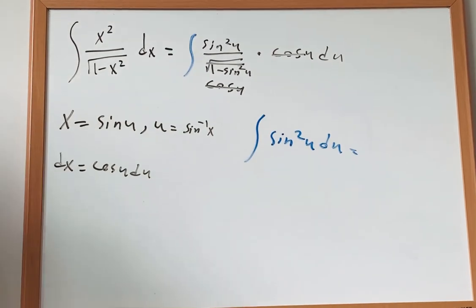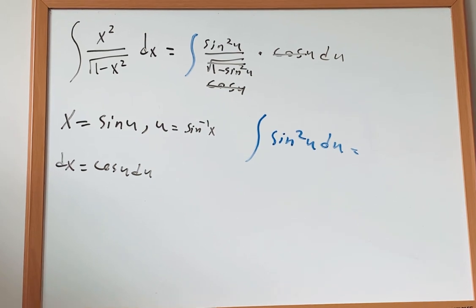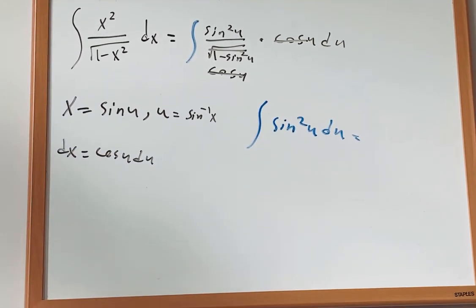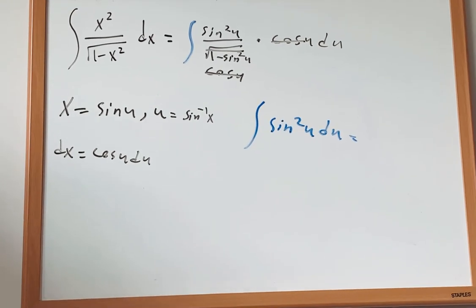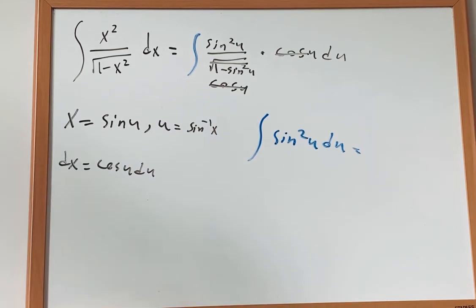And now, how do we evaluate the integral of sine squared u du? The way we integral sine squared u du is that we can use u-substitution, and when we perform the u-substitution, we get a special answer because it's a special integral. And for our answer,